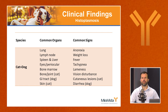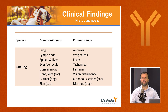Clinical signs can be vague and include anorexia, weight loss, lethargy, fever, and unresponsiveness to antibiotics. Cats are often tachypneic but not coughing, while dogs are also often tachypneic but cough more often than cats. Cats with bone and joint involvement are almost always lame. Both species can have vision disturbances. Cutaneous lesions are often ulcerative or nodular, and dogs will often present with diarrhea.